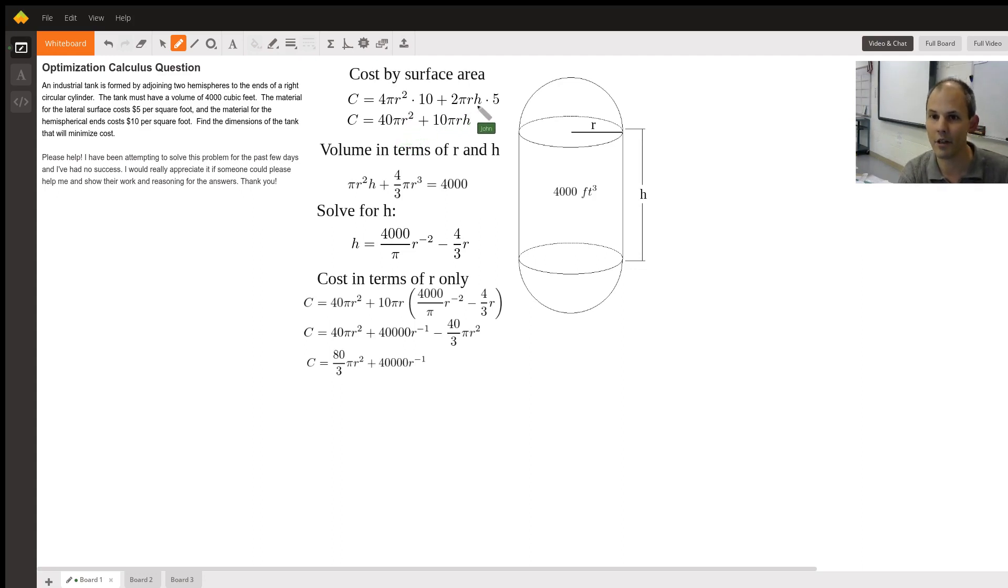For the lateral surface of the cylinder, that's 2πrh, because 2πr is the circumference of the circle, and it forms like a rectangle with a height of h. Multiply that by 5, which is $5 per square foot, I get 10πrh.